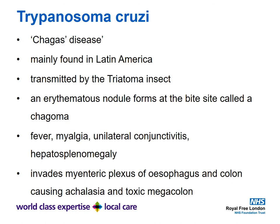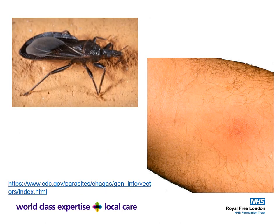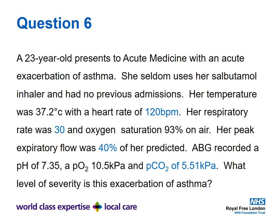Trypanosoma cruzi, otherwise known as Chagas disease, is found in Latin America — the clue given in the stem. It is transmitted by the Triatoma insect. Features include an erythematous nodule at the bite site called a chagoma, fever, myalgia, unilateral conjunctivitis, and hepatosplenomegaly. The organism invades the myenteric plexus of the oesophagus and colon, causing achalasia and toxic megacolon. The Triatoma insect and chagoma are pictured here. More details are available on the CDC website.